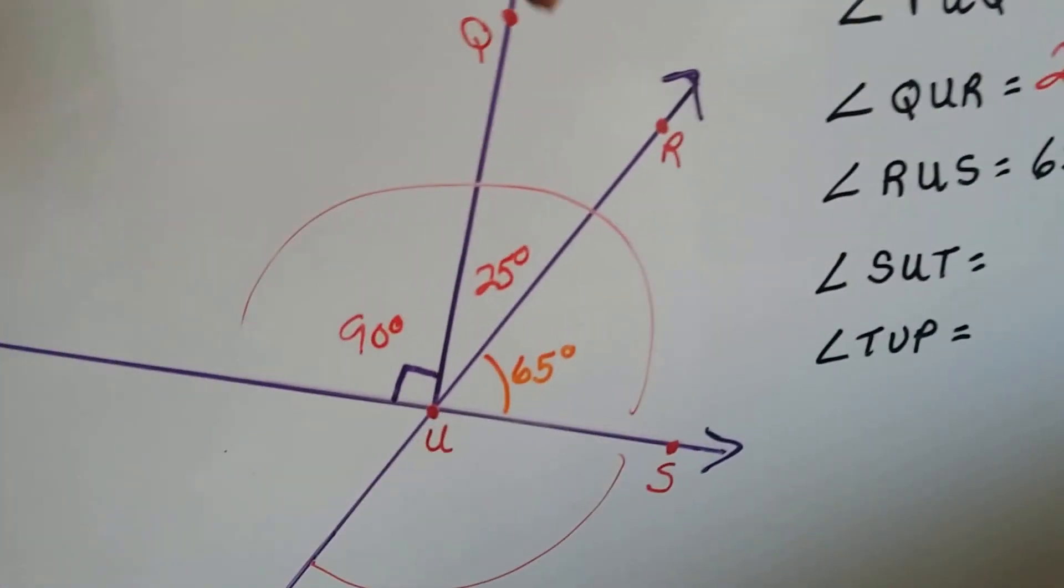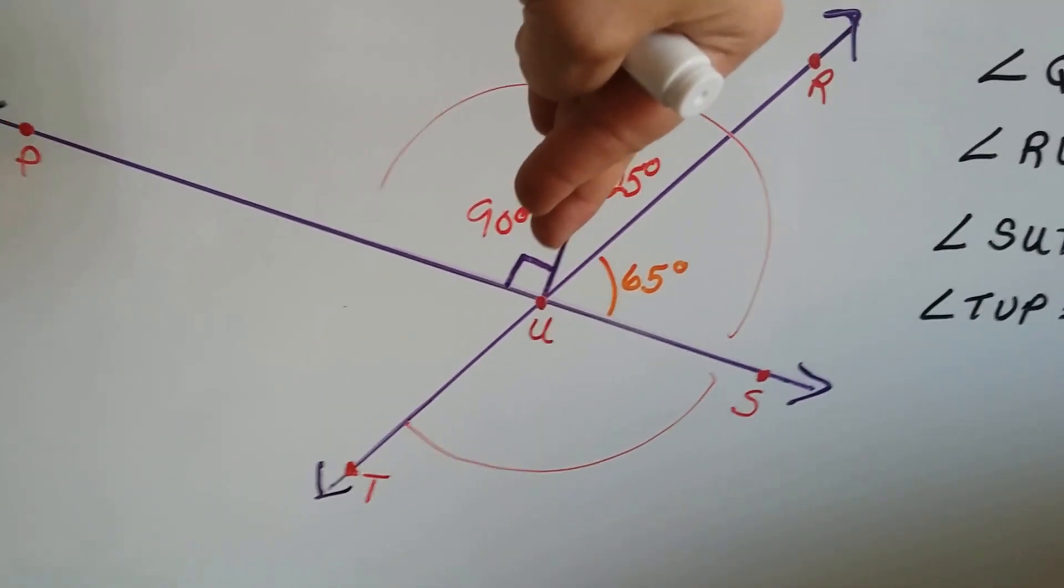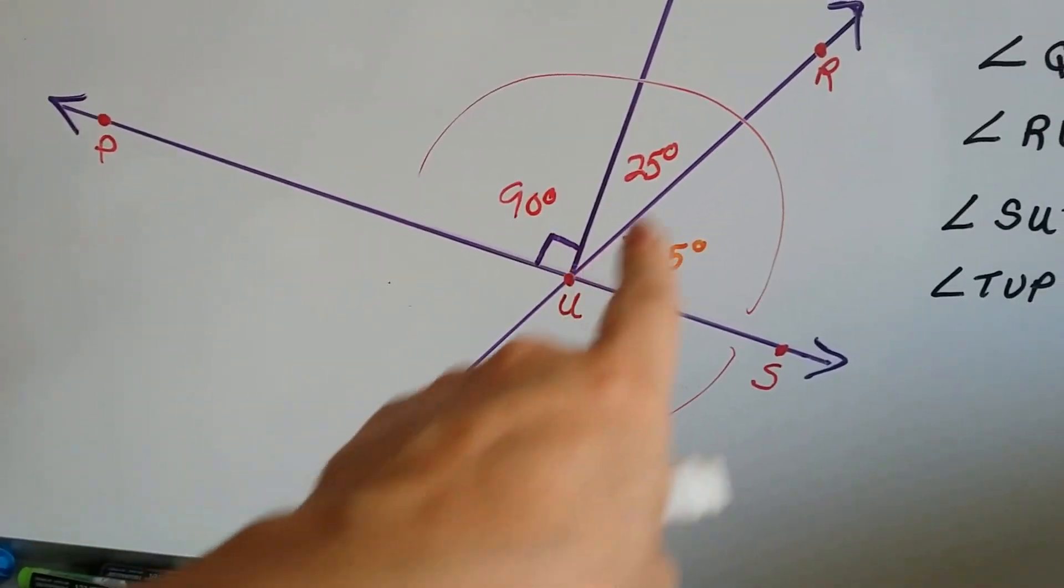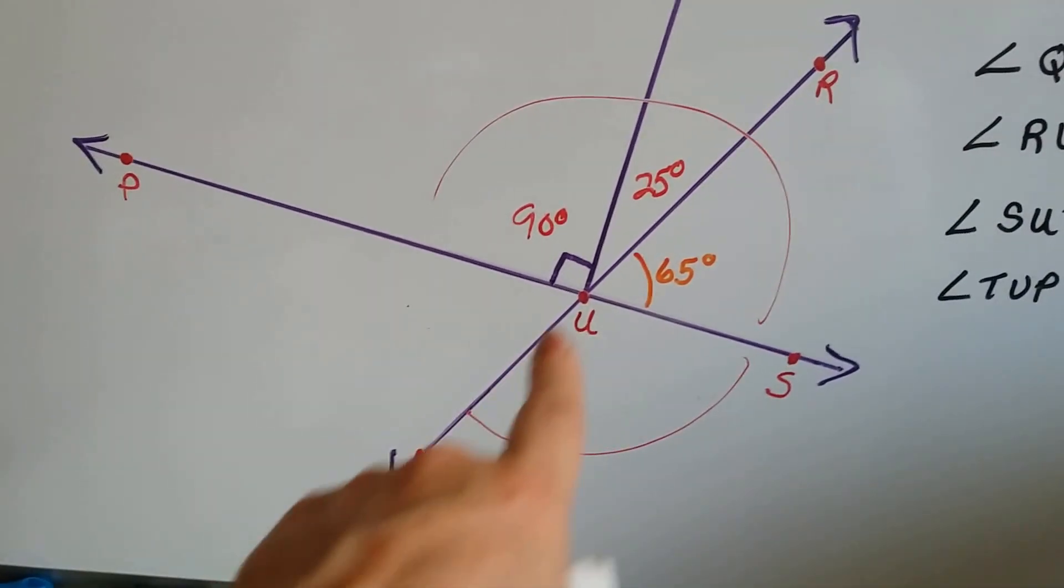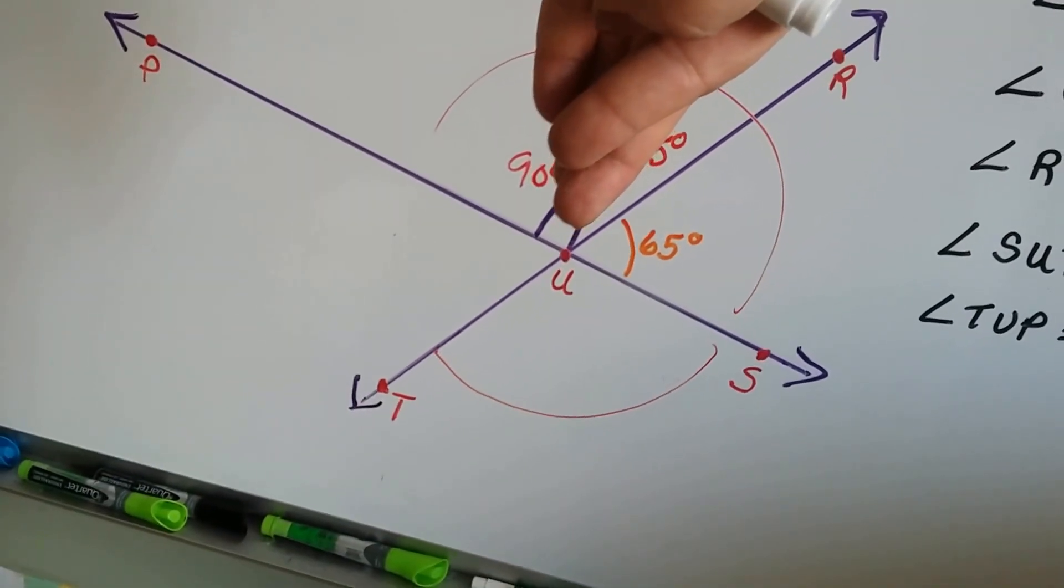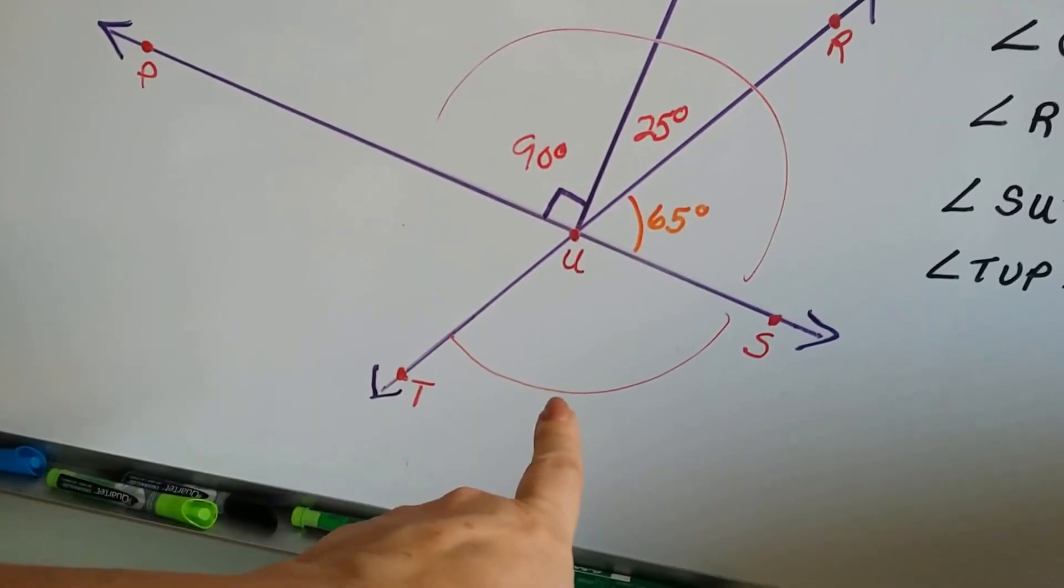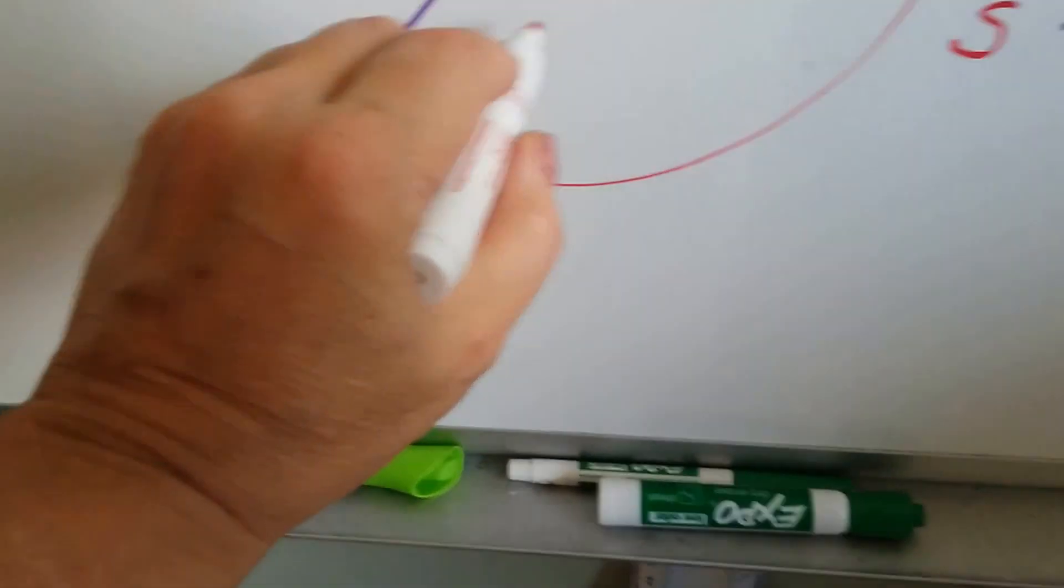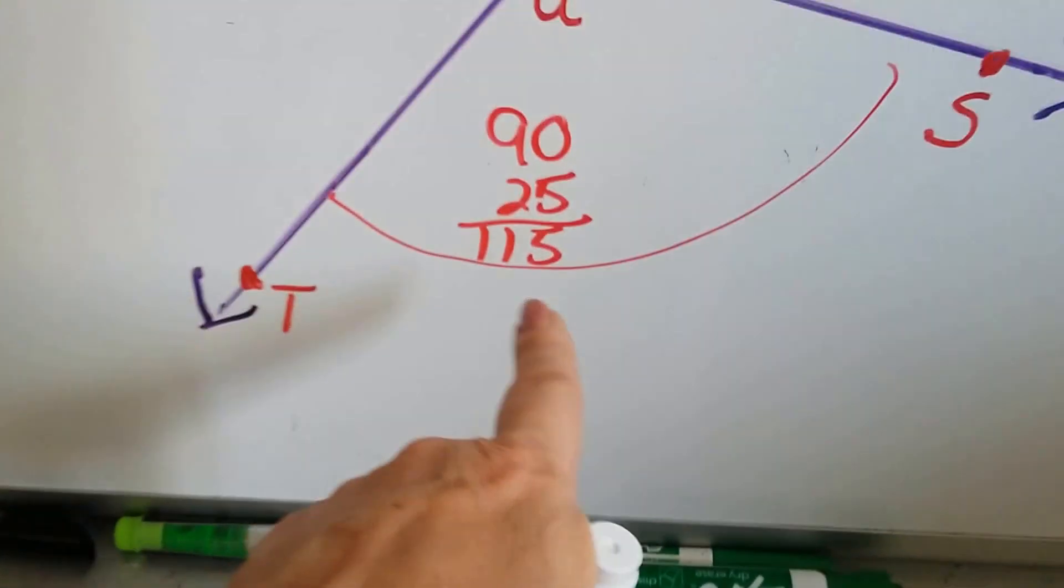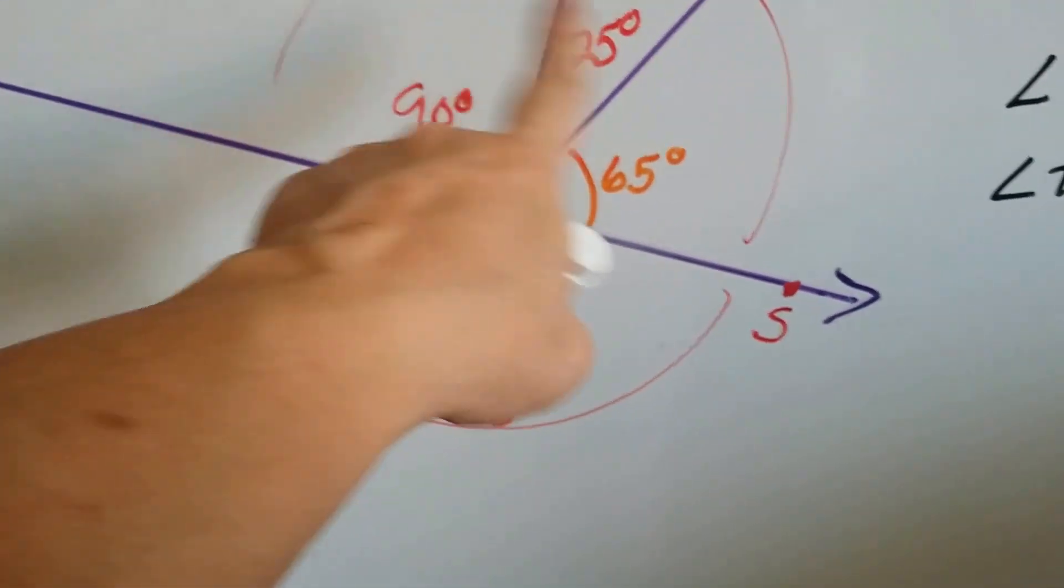What if we were to take this line away? Would S, U, T be vertical to P, U, R? Would this measure right here be vertical to this measure? Take a look at that. Does it look like they would be opposite each other? Yeah. So 90 and 25 together is S, U, T. So S, U, T must be 115 degrees because that's what the 90 and 25 equal.